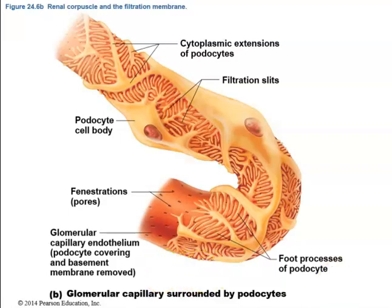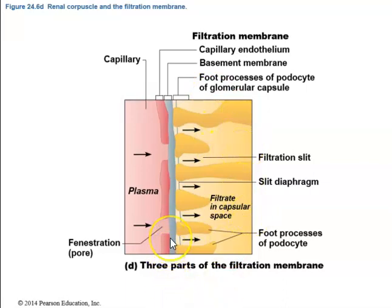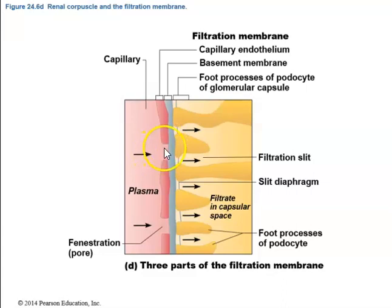The basement membrane consists of the fused basal lamina of the endothelium and the podocyte epithelium. In histological images, the podocytes with their foot processes and filtration slits are visible next to the glomerular capillary that is filtered. Blood crosses the fenestration pores of the capillary, then the basement membrane, and then through the filtration slits of the podocytes. These are the three components of the filtration membrane.